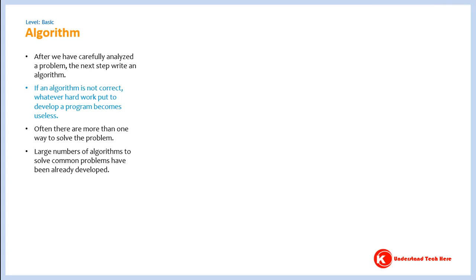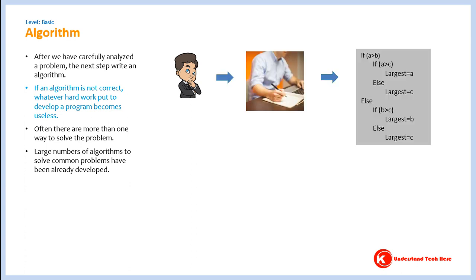As we said, the first step is to carefully analyze a problem. After that, the next step is to write a step-by-step procedure to solve a problem. The step-by-step procedure which when followed leads to a solution of a problem is called an algorithm.